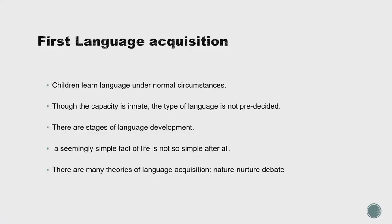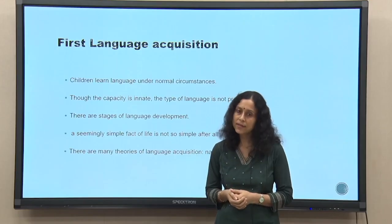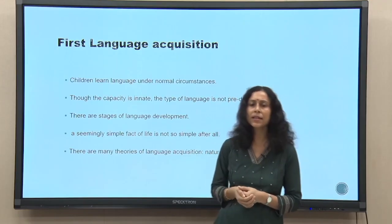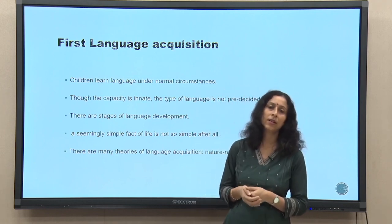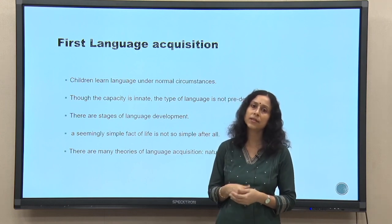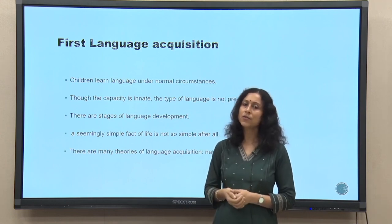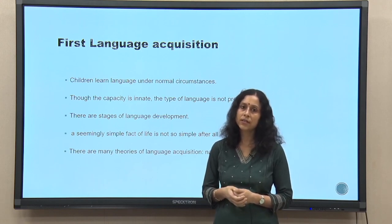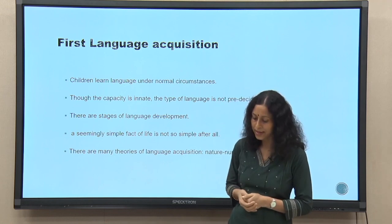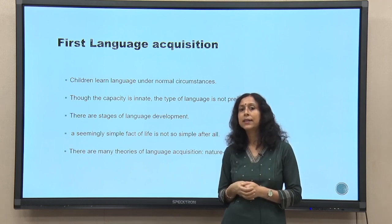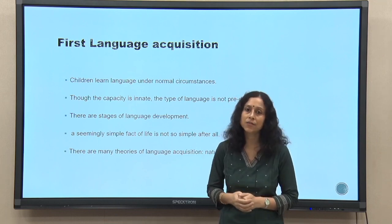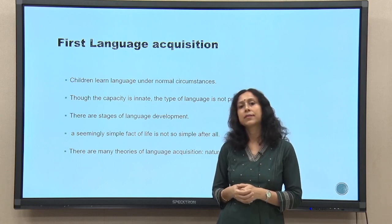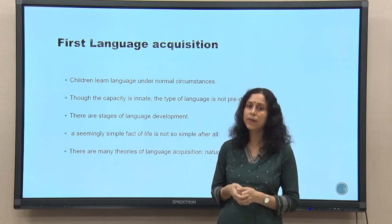The type of language one will speak is not pre-decided — it depends on the kind of circumstances one is born into. There are stages of development, starting with babbling, cooing, one-word stage, two-word stage, and so on. These stages are almost universal; children everywhere learn to speak in the same way. On the surface it appears a very simple affair — every child learns to speak, and remarkably fast.